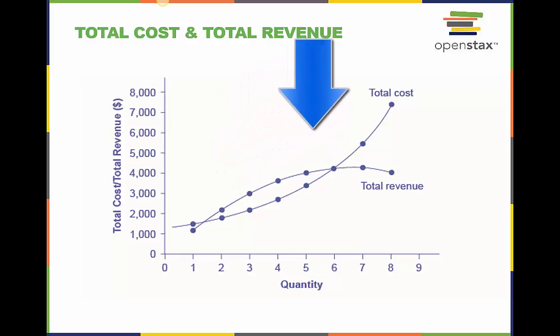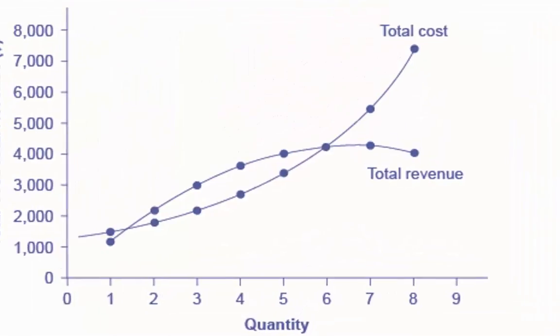The total cost curve is upward sloping. Profits will be highest at the quantity of output where total revenue is most above total cost. Of the choices, the highest profits happen at an output of 4. The profit-maximizing level of output is not the same as the revenue-maximizing level of output, which should make sense because profits take costs into account and revenues do not.